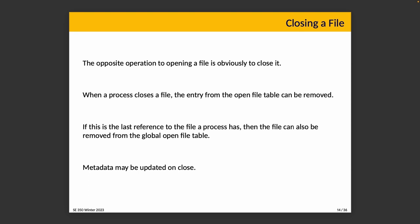There is also a limit to how many files you can have open — by default on Unix, around 1024 — because that's the size of the array in the process open file table. Additionally, metadata is updated when a file is closed: the last-accessed time will be updated at that point, since closing marks the end of our access to it.